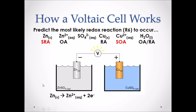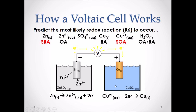We start with the site of oxidation — the loss of electrons — which involves the strongest reducing agent, zinc solid. This electrode breaks down into Zn²⁺ ions, which travel into the solution, releasing two electrons. Those electrons travel through the external wire to the other electrode, where the strongest oxidizing agent, Cu²⁺ ions in solution, gains those electrons, forming copper solid. Since this is the site of reduction, this is the cathode, and since the other beaker is the site of oxidation, that electrode is the anode.